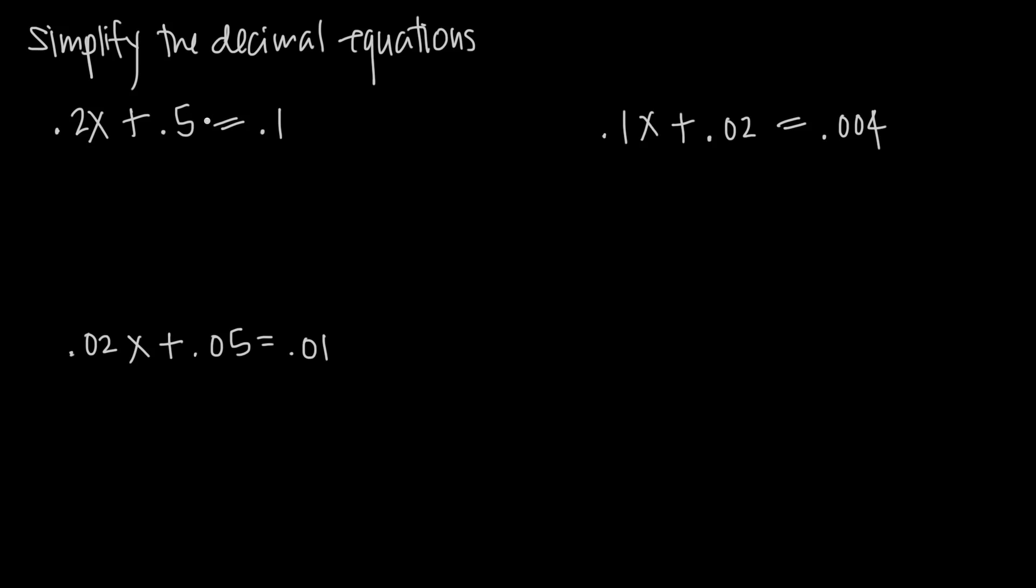We're going to look for the smallest decimal, and then multiply by whatever power of 10 we need to make that decimal a whole number. So for example, I have .2, .5, and .1. All of these end in the tens place, which means I need to multiply this entire equation by 10 in order to make all of these decimals whole numbers.